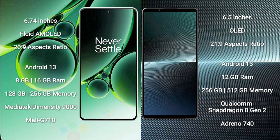OnePlus Nord 3 comes with 8GB or 16GB RAM and 128GB or 256GB internal storage, powered by the MediaTek Dimensity 9000 processor and Mali-G710 GPU.